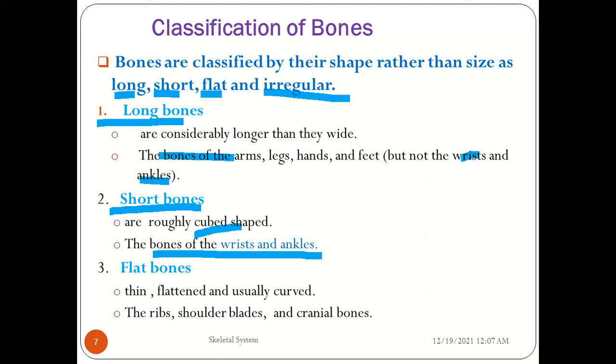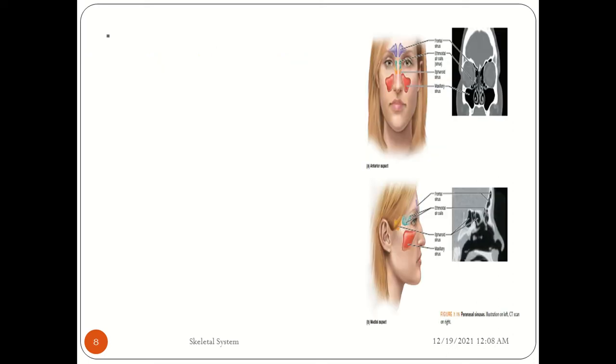Flat bones are thin, flattened, and usually curved. The ribs, shoulder blades, and cranial bones are all grouped under flat bones.